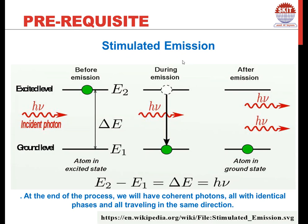First I shall start with stimulated emission. We all know that an atom would be found in a ground level state or the ground state. Now with the interaction of any incident photon, it would absorb this particular energy and reach an excited state. In this diagram we have energy E1 which is the ground state energy and E2 which is the excited level energy, and with the absorption of a photon h-nu, the atom moves from energy level E1 to energy level E2.